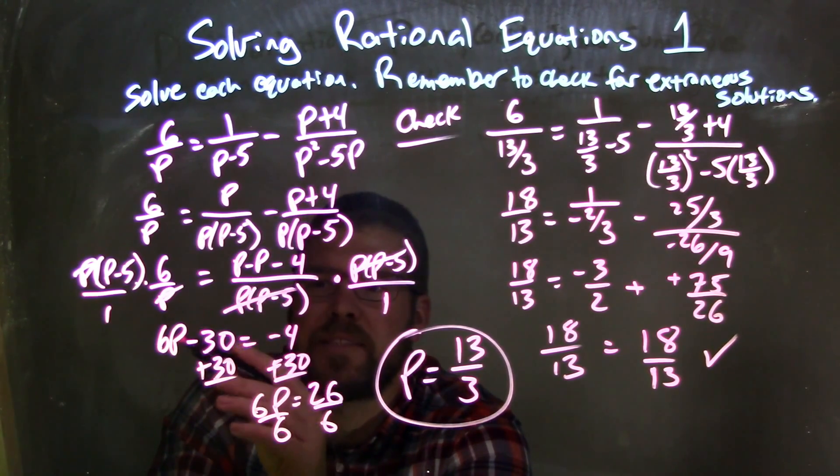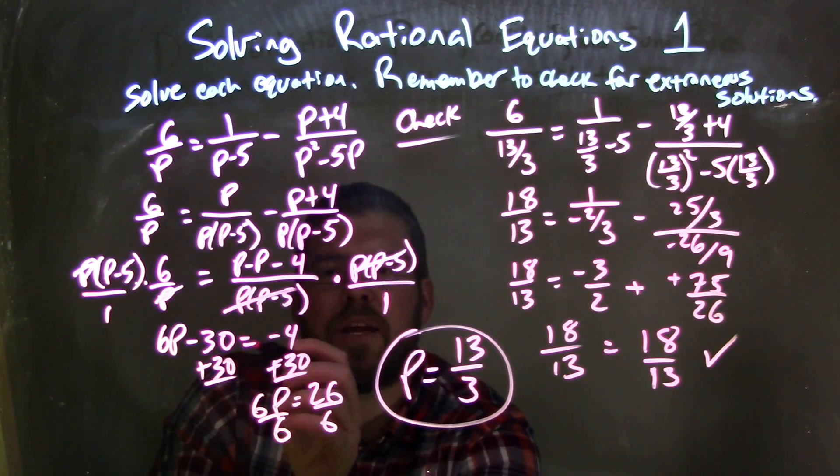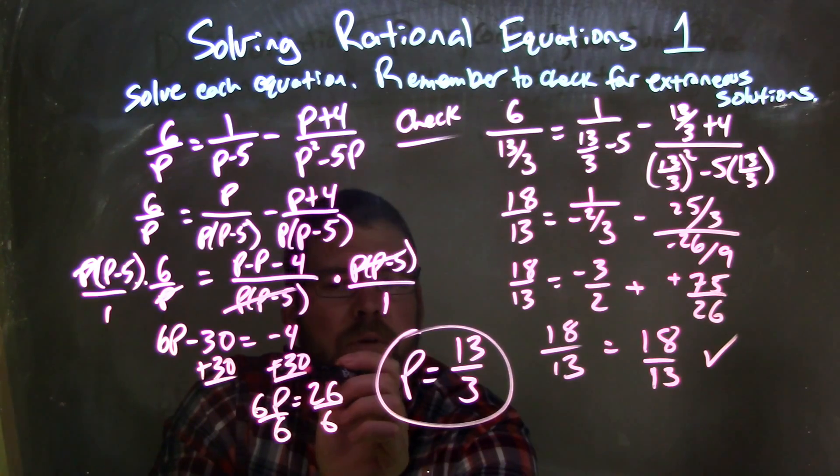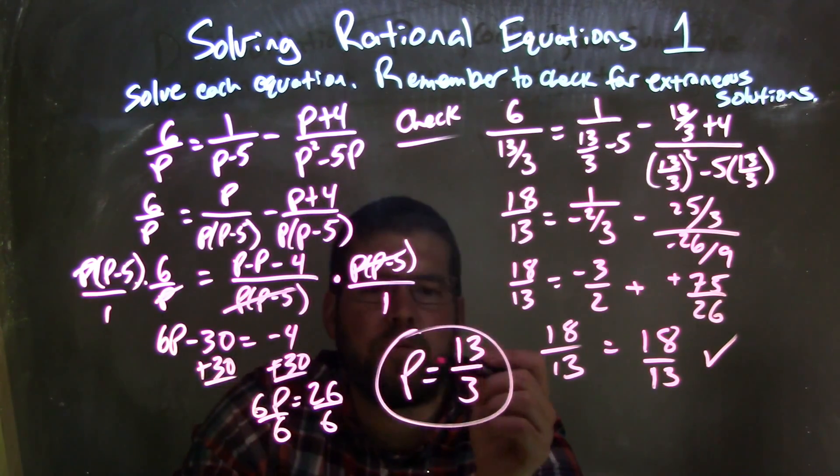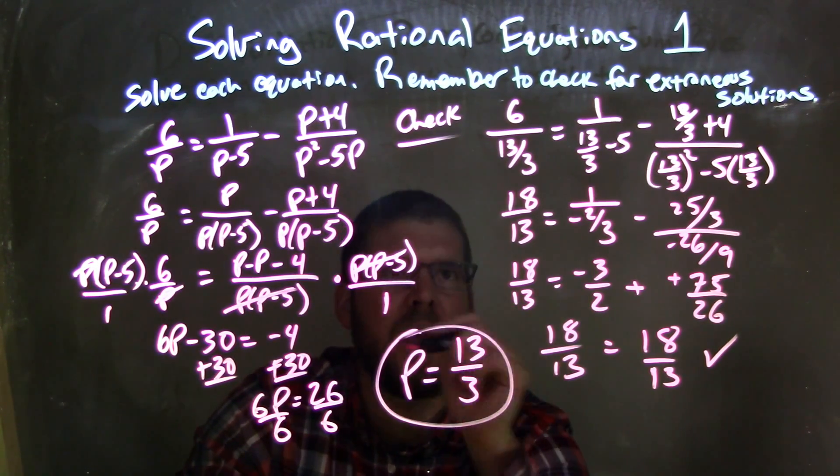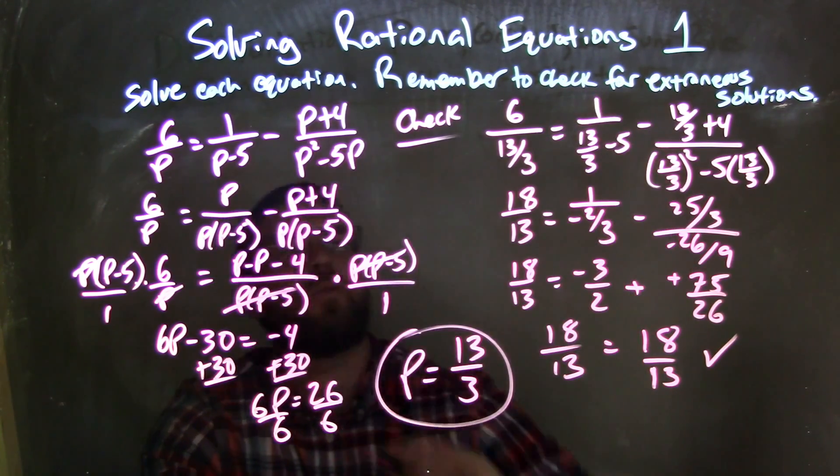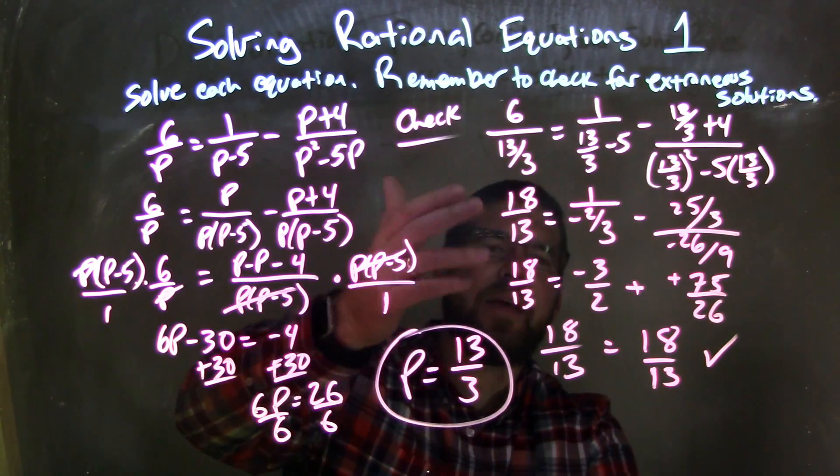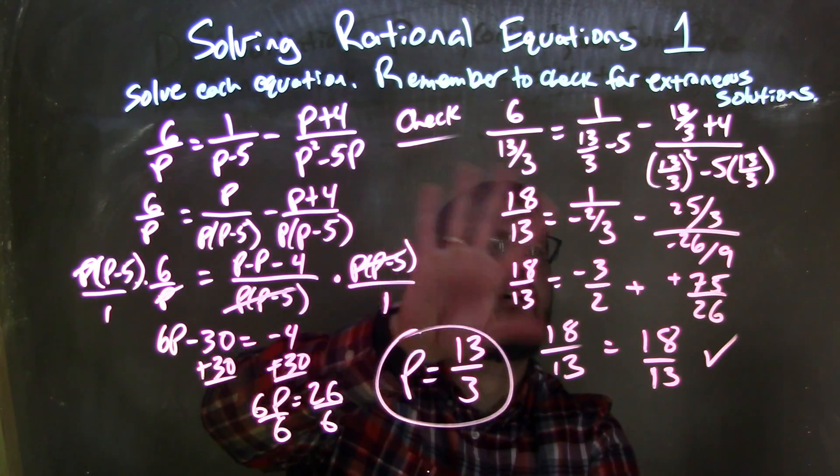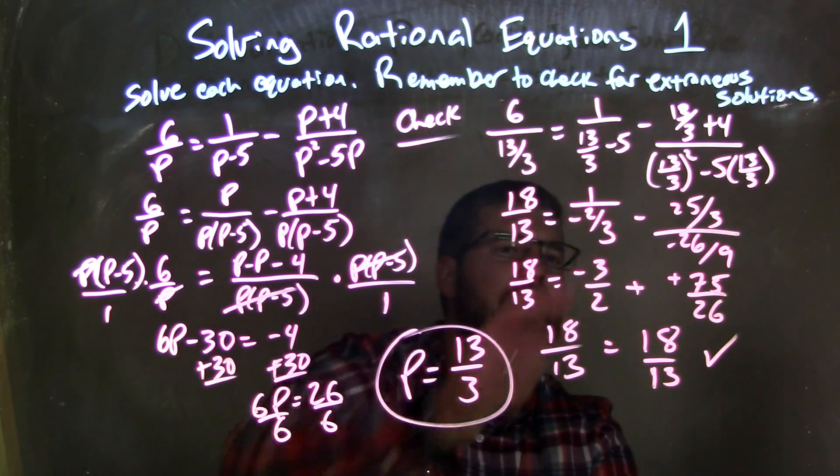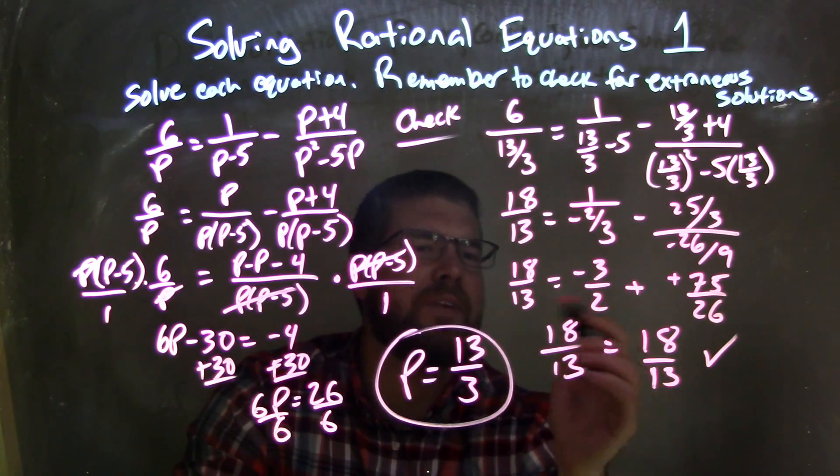And that eliminated a lot, leaving me 6, I distributed, 6p minus 30 equals negative 4, and then added 30 to both sides, divided by 6, and simplifying that p equals 13 over 3. I then had to check it, so I plugged 13 over 3 back into my equation, and then I used my calculator when I saw the fraction work here. Simplify, simplify, simplify.